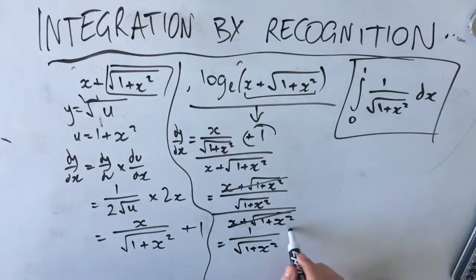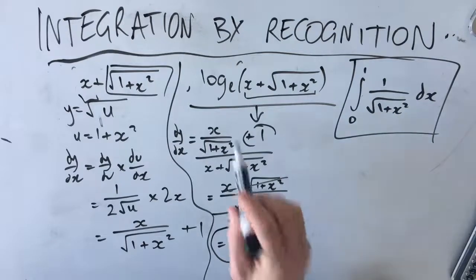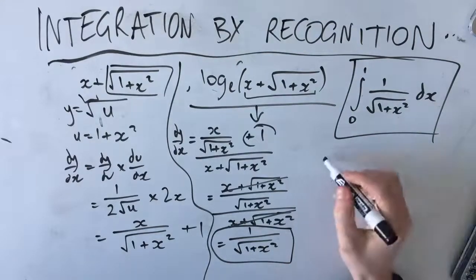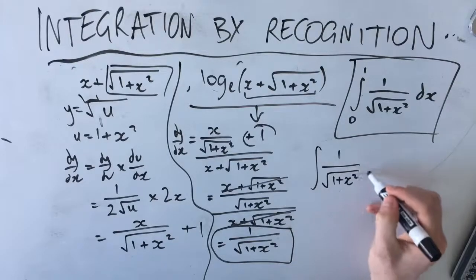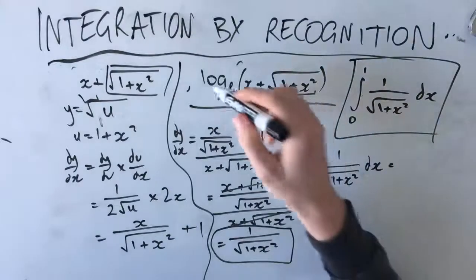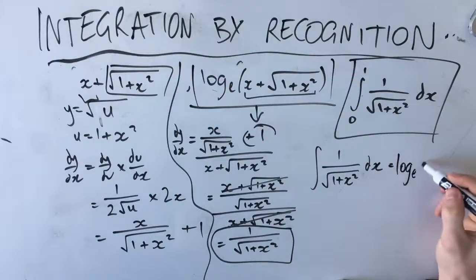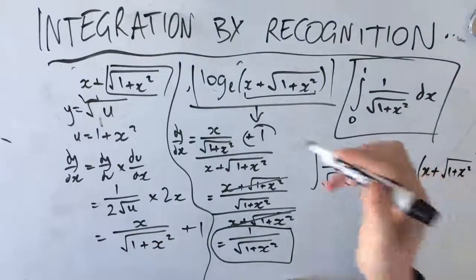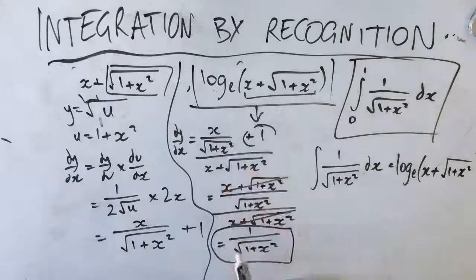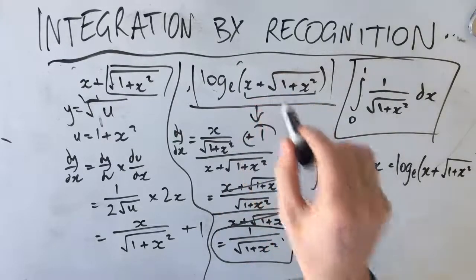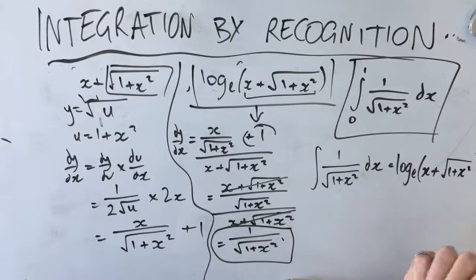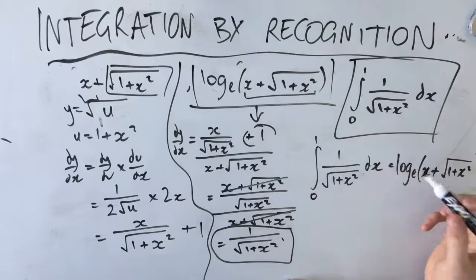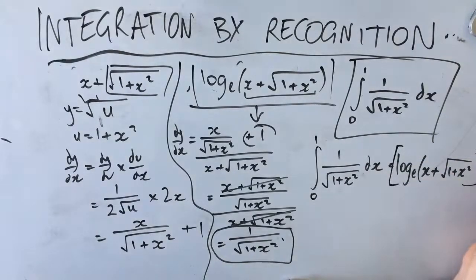So the derivative of log_e(x + root(1 + x²)) is 1/root(1 + x²), which means the antiderivative of 1/root(1 + x²) dx equals log_e(x + root(1 + x²)). That's the whole process of integration by recognition. Now we just need to evaluate from 0 to 1.